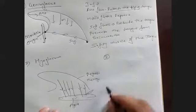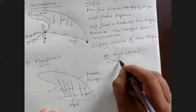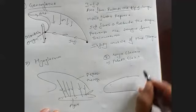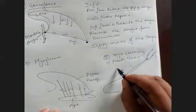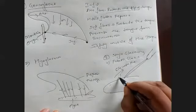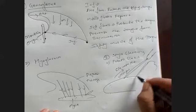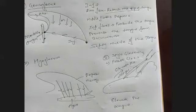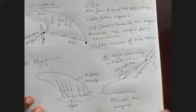Muscles number three and four are styloglossus and palatoglossus. They come from above. Styloglossus comes from the styloid process, so its action will be to elevate the tongue. The same applies to palatoglossus - it will also elevate the tongue. These two muscles elevate the tongue during deglutition. During deglutition, we want to push the food to go behind, so the tongue becomes elevated and the food falls into the pharynx.